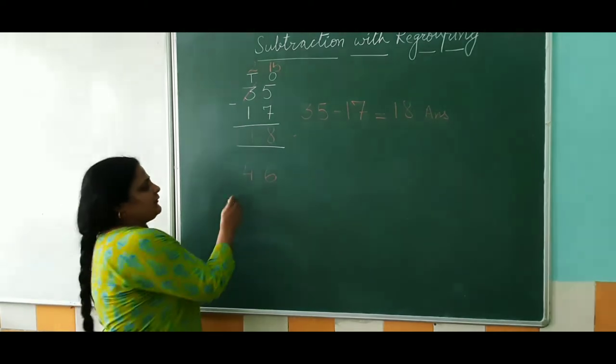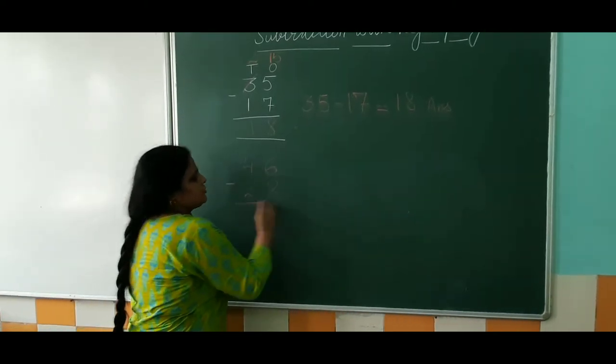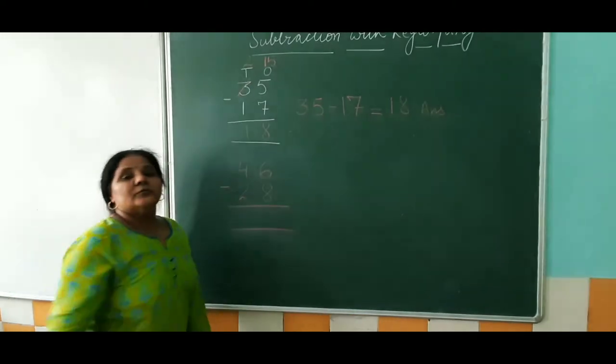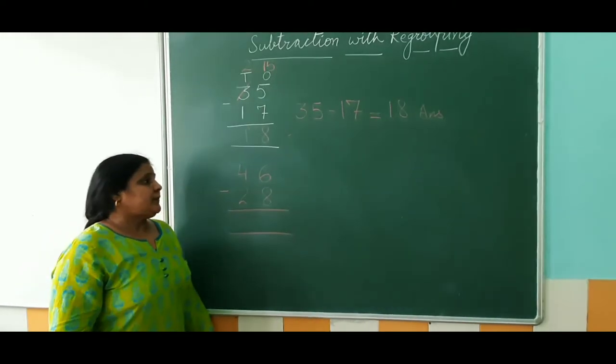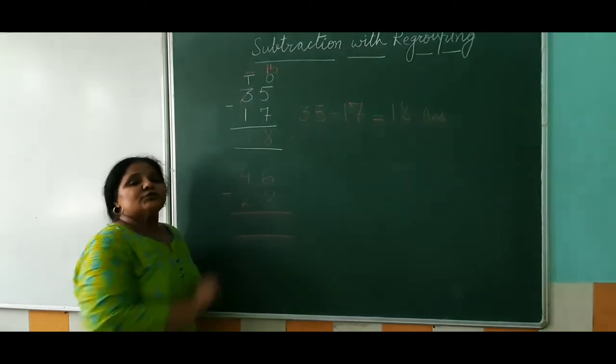So what we have to do? We have to give each one of them 1 chocolate. Now how do we give out of 6 to 8?